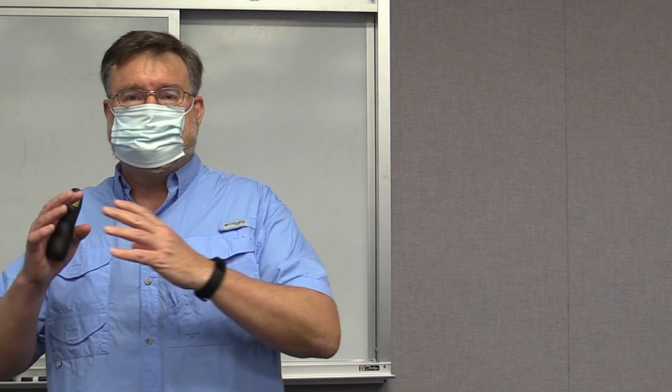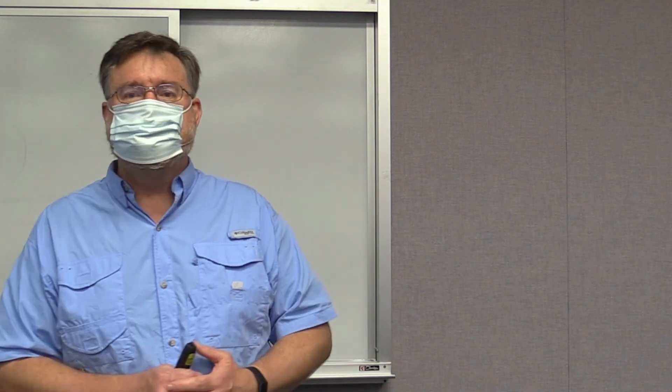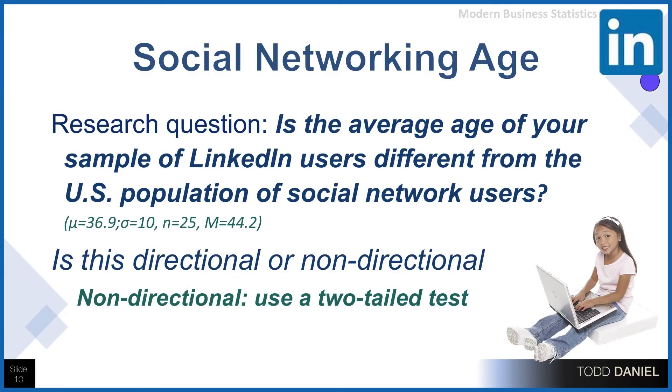You can tell already from that research question we're asking, is our sample different than our population? Because we're not asking, are they older, are they younger, a directional hypothesis. We're simply asking, are they different? This is a non-directional hypothesis using a two-tailed test.